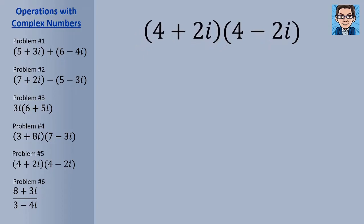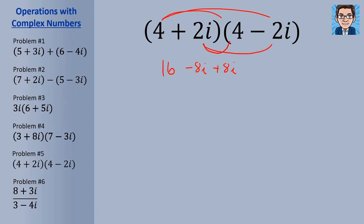The next two complex numbers to multiply are conjugates. Multiplying: the first terms give 16, the two middle terms — 4 times minus 2i equals minus 8i and 2i times 4 equals plus 8i — cancel each other out, and the last terms give minus 4i squared. We get 16 minus 4i squared; replacing i squared with negative 1 gives 16 plus 4, or 20.